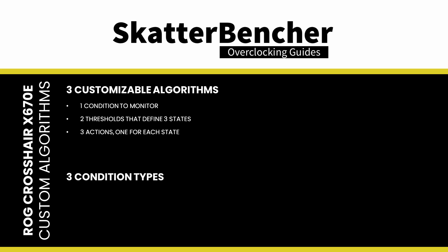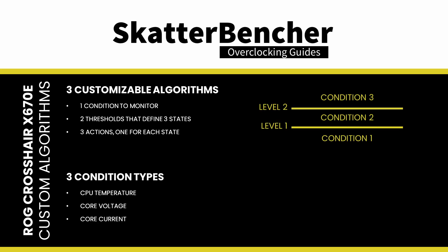There are three available conditions: CPU temperature, core voltage, and core current. For each condition, you have three states: below Level 1, between Level 1 and 2, and above Level 2.